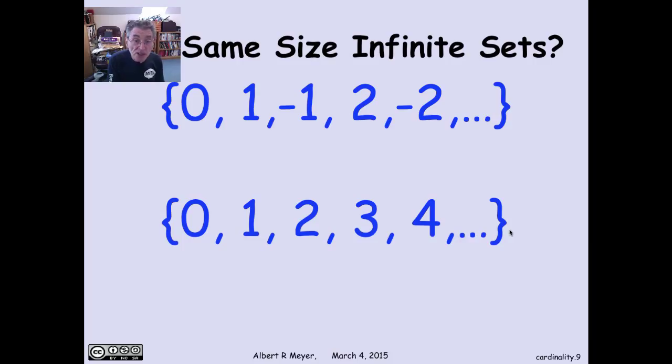So N is the same size as the positive integers. Well, in fact, let's look at this one. I can enumerate on the top all the integers, both positive and negative. Right? 0, 1, minus 1, 2, minus 2, and so on. And that gives me the set consisting of all the integers. And over here, I can have 0, 1, 2, just the non-negative integers.